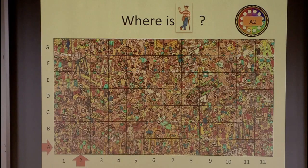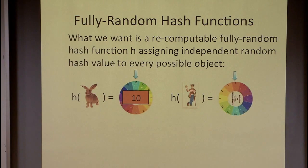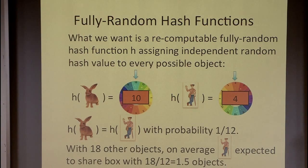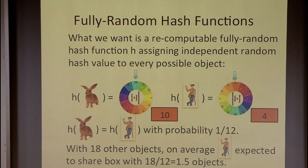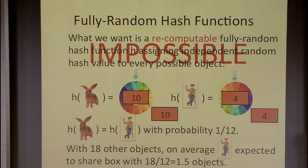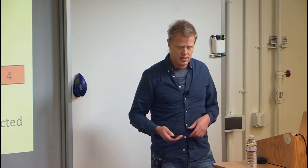This is a fully random hash function I've tried to describe — a recomputable function that assigns independent random values to every possible object in the universe. The rabbit gets one number, WALL-E gets another number. Because the numbers were between 1 and 12, the probability of getting the same number is 1 in 12, and with 18 other objects, we expect that WALL-E gets together with one-and-a-half other objects. The essential thing here is we want it to be recomputable, so if we spin the wheels again, we want to get the same values. And this is where things become impossible — the only way we can do this is by remembering all the different numbers. But we're trying to design a system to store things; now we just have to store the numbers as well, which makes things far worse.